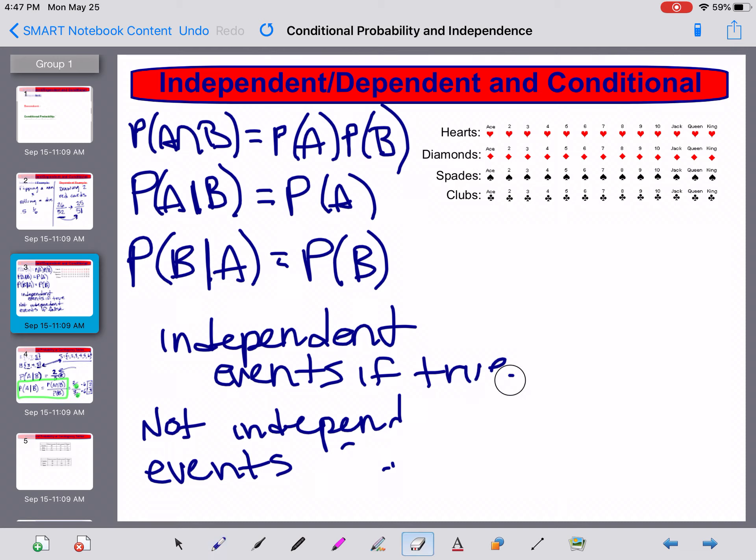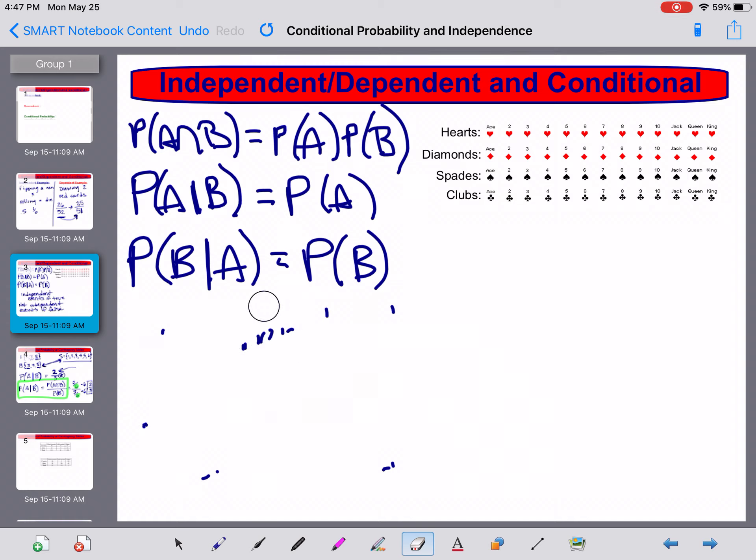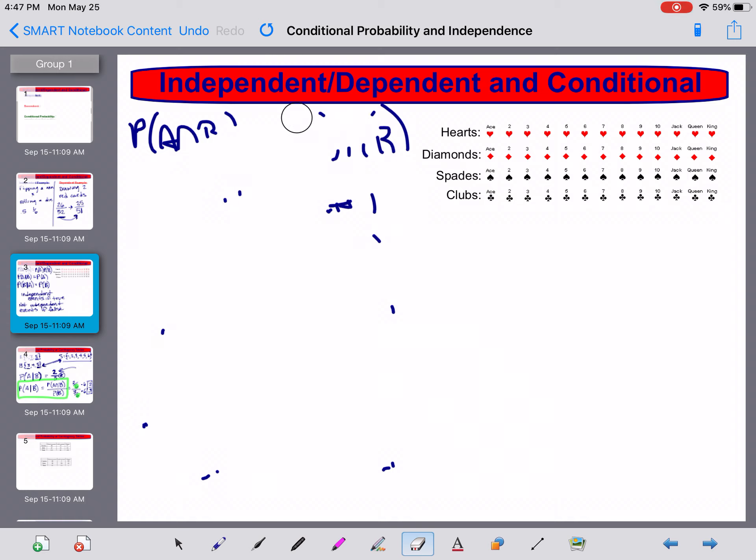So let's give ourselves some examples on these. Let's use these cards. Let's ask the question: are the following events independent?